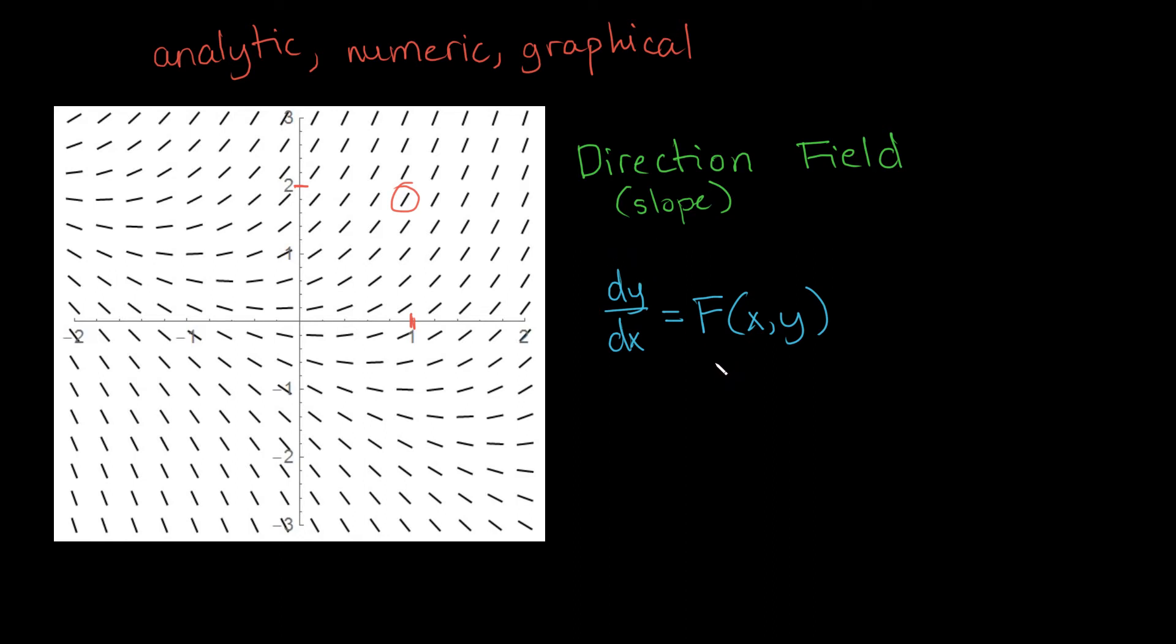What this line segment is telling us is simply the dy dx of whatever function this slope field is of at 1, 2. And what's nice about this is we don't have to do any special math to figure out this slope. Because by definition, the differential equation is giving us dy dx as some function of x and y. And dy dx, this is exactly the slope.